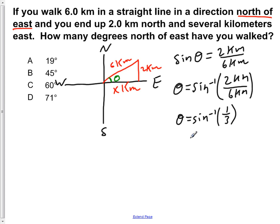If you carry this calculation out on your calculator, you would see that theta is approximately equal to 19 degrees. It'll be 19.47 degrees, but because of significant figures, it's only two places, so we only care about the 19 degrees. So our answer would be A, 19 degrees.